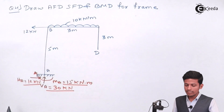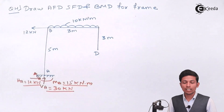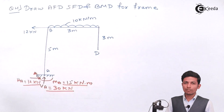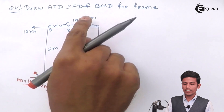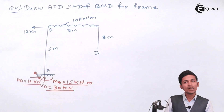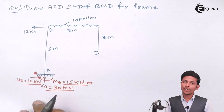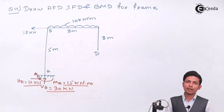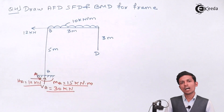In the horizontal direction the only load is 12 kN, so HA = 12 kN balances the frame. VA = 30 kN upward balances the UDL of 10 × 3 = 30 kN downward. The moment MA = 15 kN·m is also balanced. Now we consider each member separately to draw the SFD, AFD, and BMD.